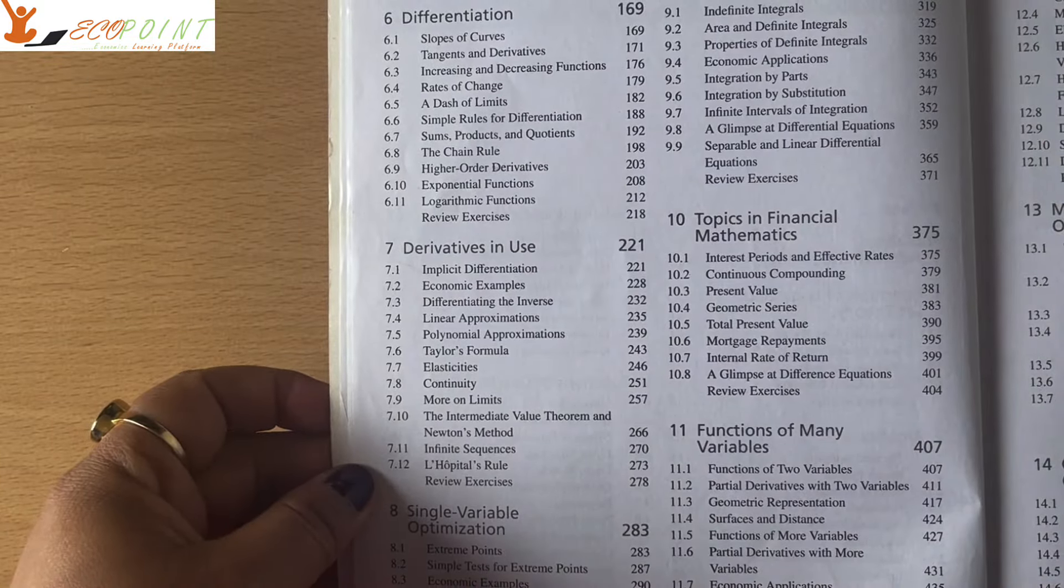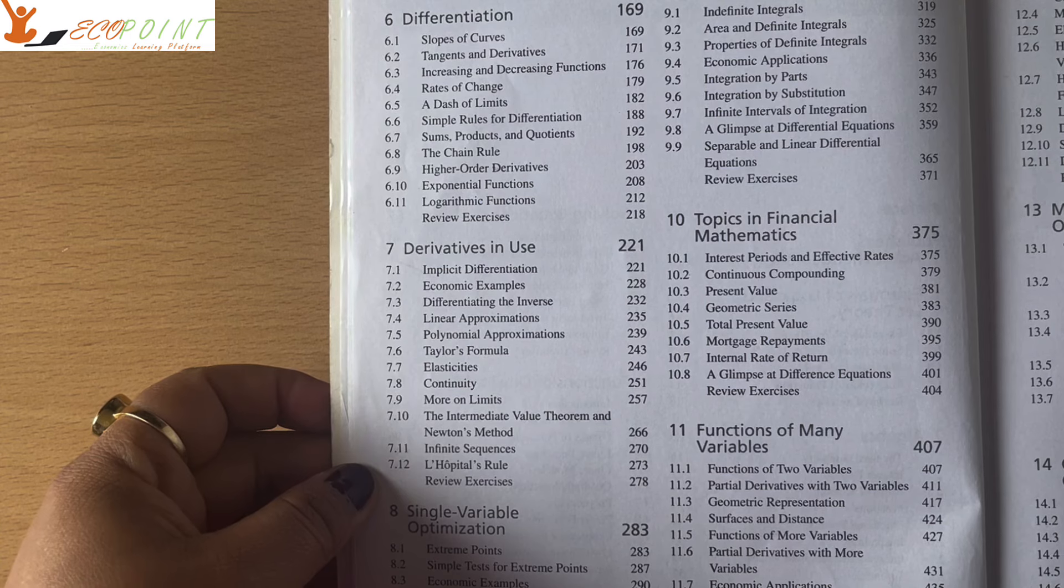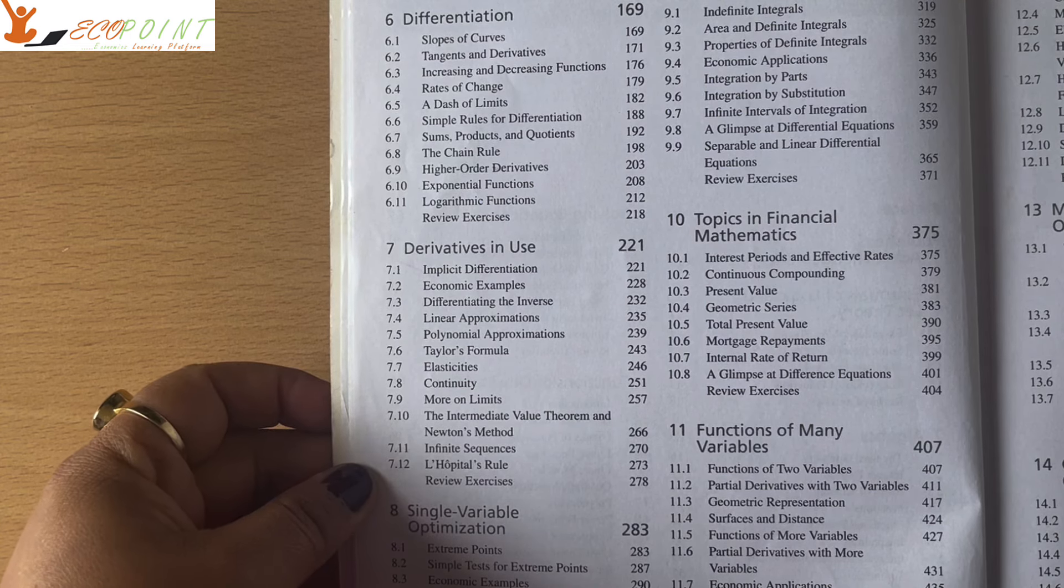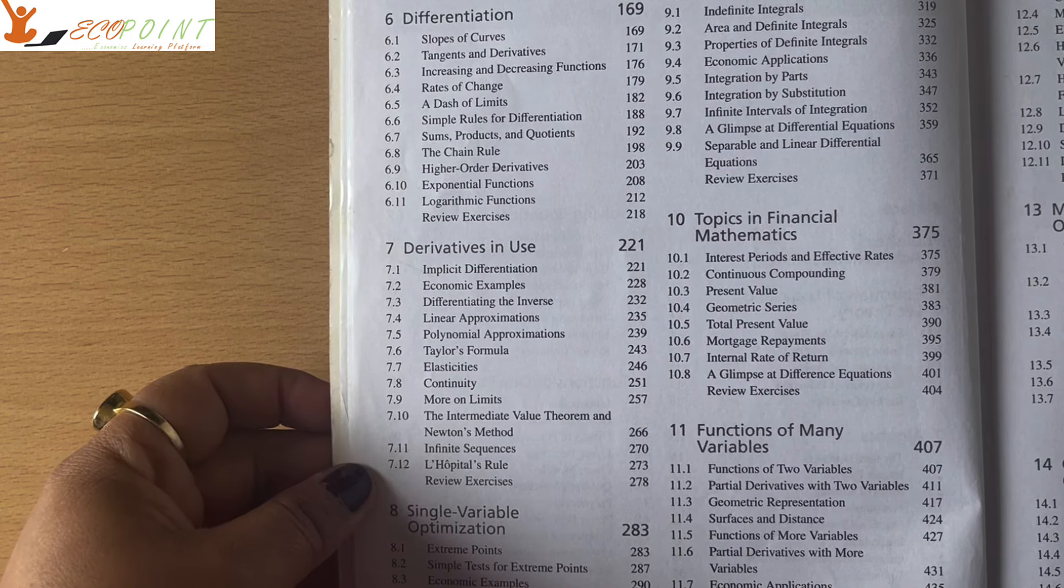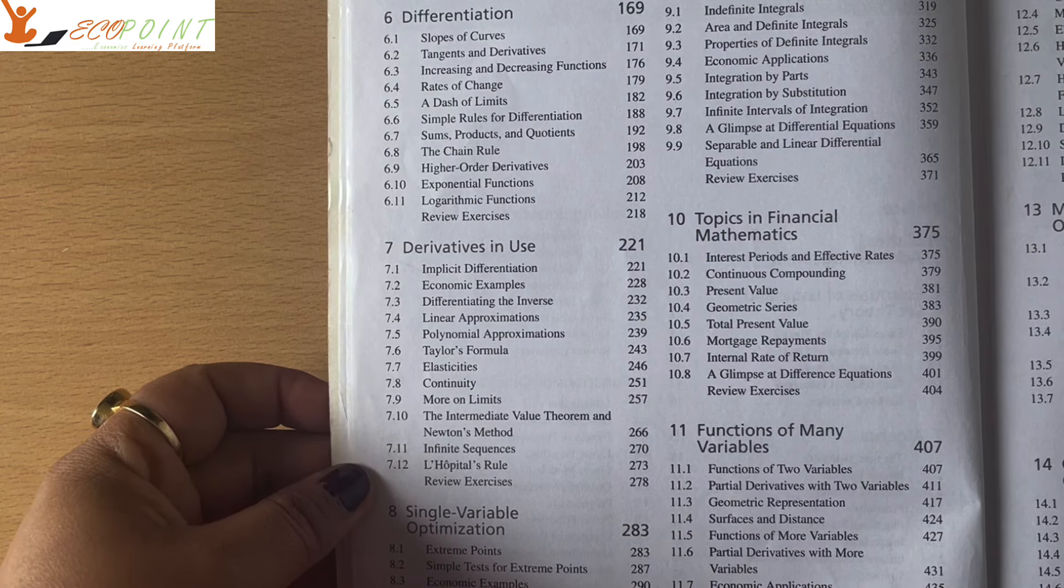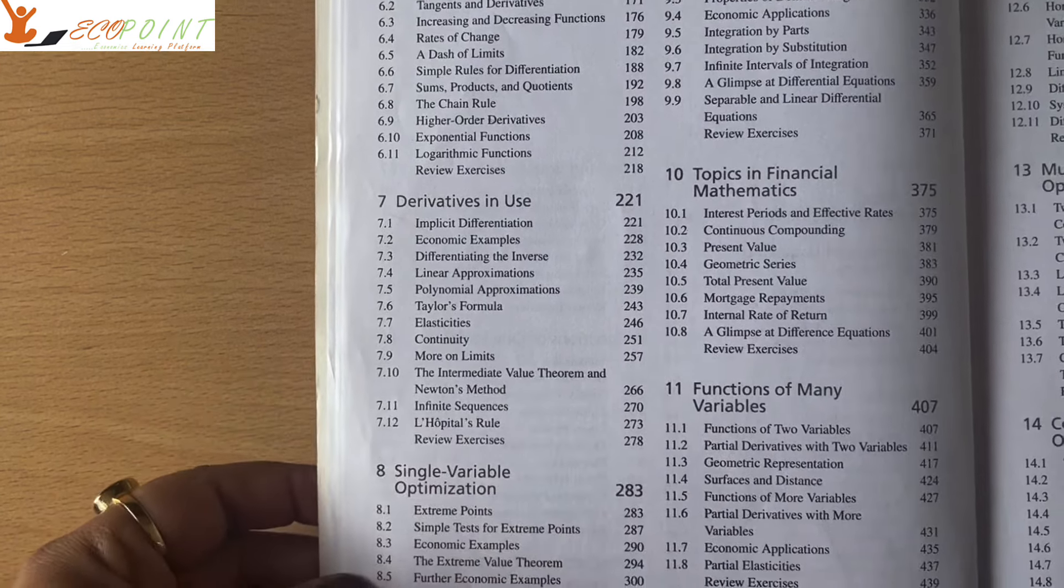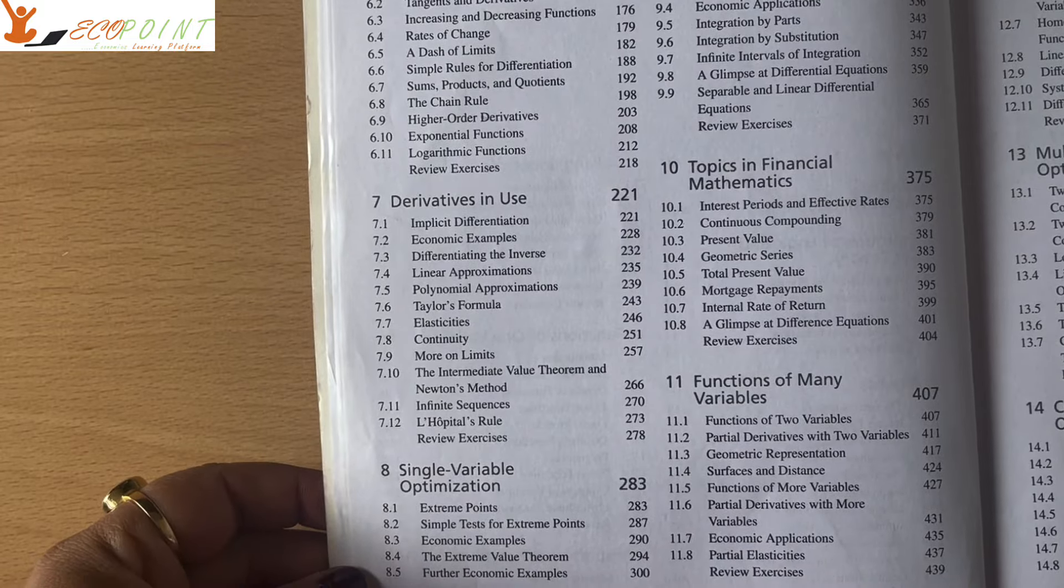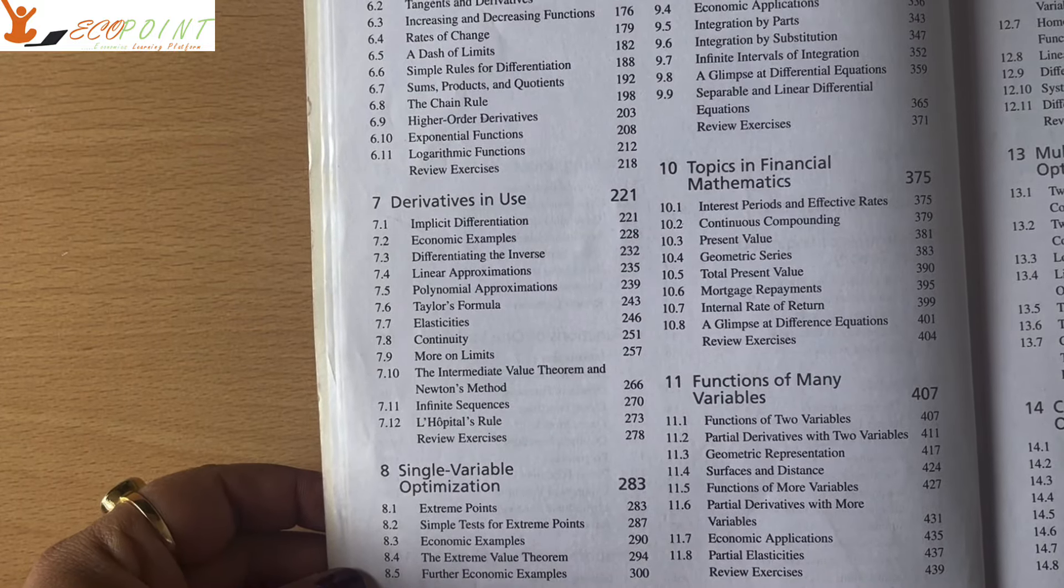After that you have differentiation. So basically the entire calculus. Now calculus comes in play. After functions, calculus, limits, continuity, differentiation. Saari ki saari aapko chapter 6, 7 mein milegi. Application of derivative aapko chapter 8 mein milega. This is all one variable right now. Must to do.